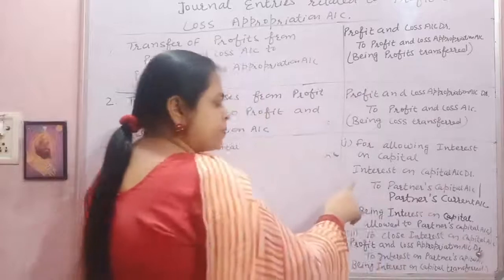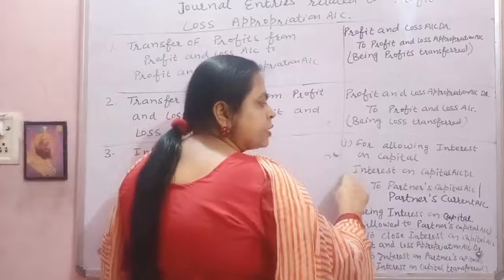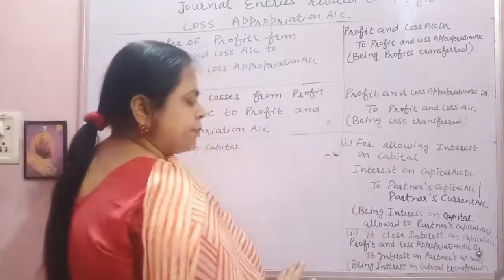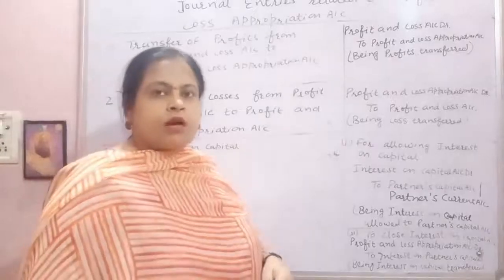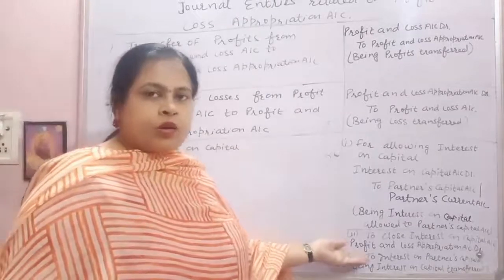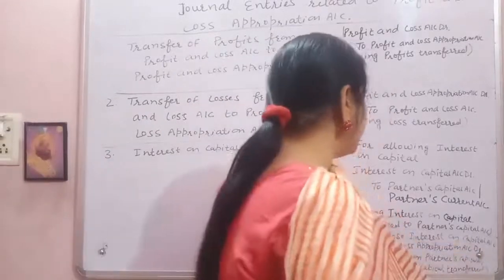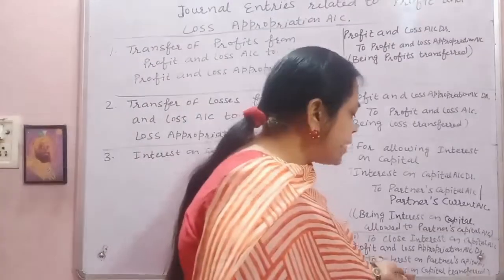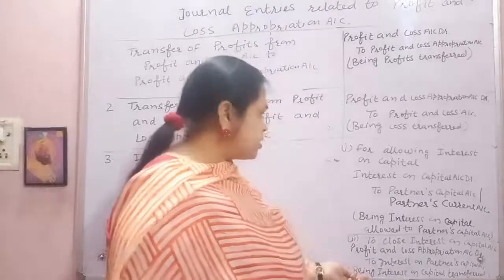Close का मतलब है कि हमने interest on capital का जो account खोला था debit में, वो close होगा credit side में। तो entry बनेगी: Profit and Loss Appropriation Account debit to Interest on Partners Capital Account. इसकी narration: being interest on capital transferred to profit and loss appropriation account.